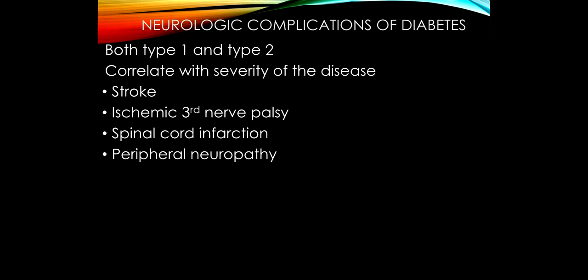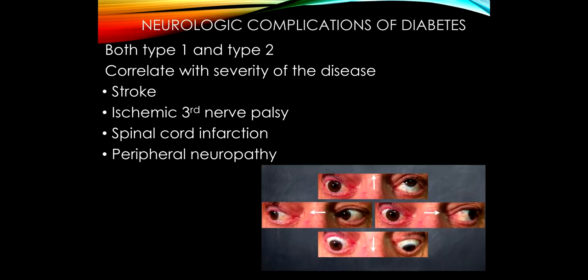We've talked about stroke — both cortical and subcortical — with much higher incidence in patients with diabetes. We've talked about third nerve palsy, and infarction of the spinal cord, just like infarction of the brain, has a higher likelihood in patients with diabetes. And in our peripheral neuropathy lecture, we said that diabetes is the most common cause of peripheral neuropathy.